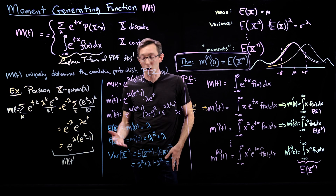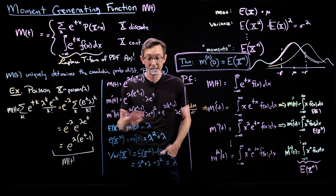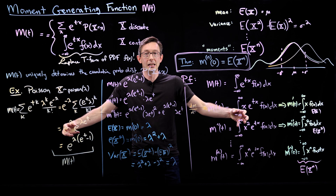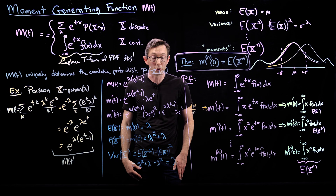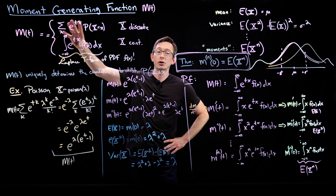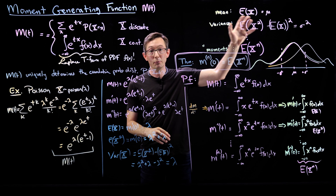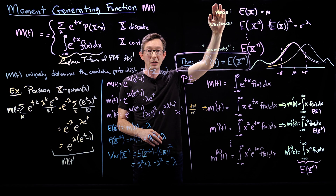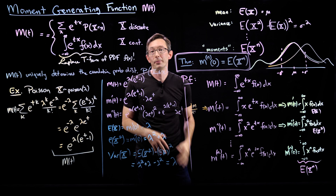I'd like you to do this as a homework: what's the third moment, the fourth moment, the fifth, sixth, and seventh? I'm sure you'll get expressions like lambda cubed plus lambda squared plus lambda — you'll get this kind of sequence. That can tell you something about the skewness, the kurtosis, all of these higher order moments, which are easy to compute for this Poisson distribution. The moment-generating function — this really powerful function, which is the Laplace transform of your PDF — allows you to compute moments like the expected value, expected value of x squared, x to the n, which are useful in computing things like the mean, the variance, the skewness, the kurtosis — the profile or fingerprint of your probability distribution.